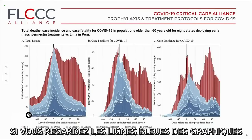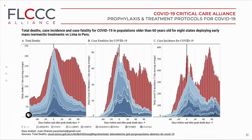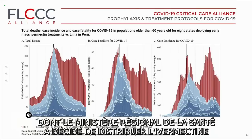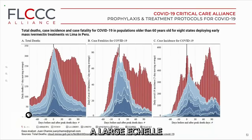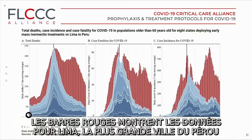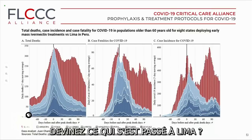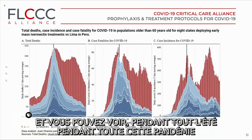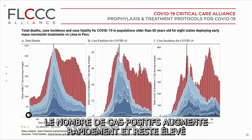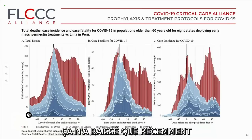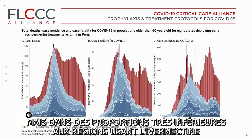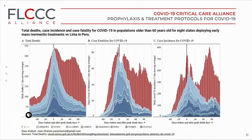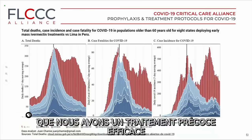Going back to Peru — the blue lines represent those eight states whose regional health ministries decided to widely distribute ivermectin. The red bars refer to Lima, the biggest city in Peru. The health ministry of Lima did not employ ivermectin in the treatment of COVID-19. Throughout the summer and this pandemic, case counts in Lima rapidly rose and remained high, and only recently came down — but nowhere near the levels seen in regions where ivermectin was widely used. We have this data. It shows we have an effective treatment against this pandemic. I cannot overemphasize that.